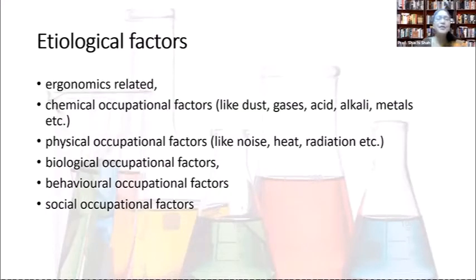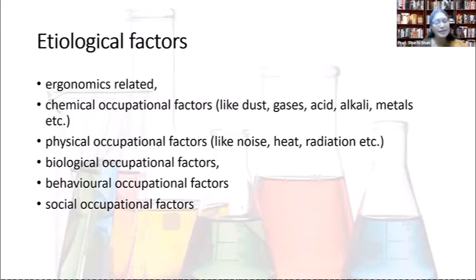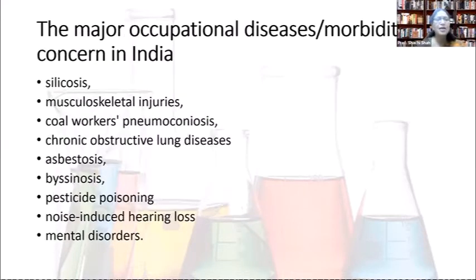Etiological or disease-causing factors include ergonomic factors, exposure to chemicals such as dust, gases, acids, alkalis, and metals, physical occupational factors like noise and radiation, biological occupational factors, behavioral factors such as work stress, violence, and sexual harassment, and social occupational factors.